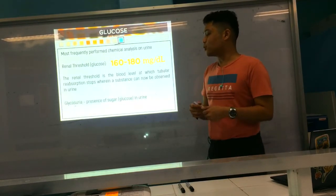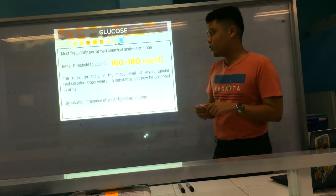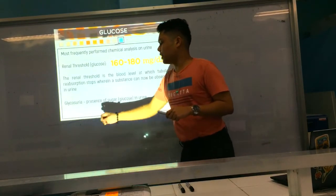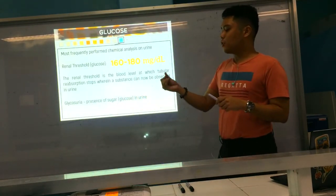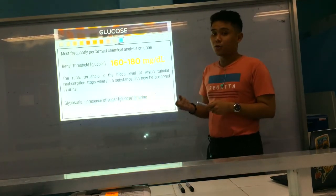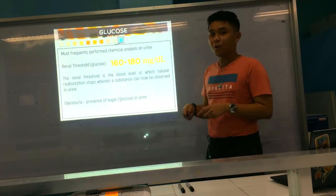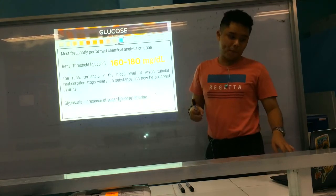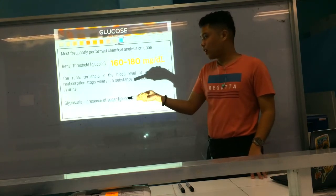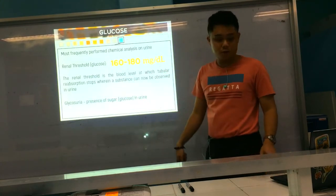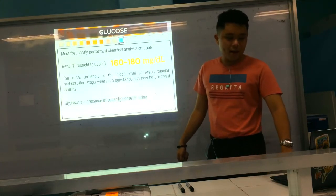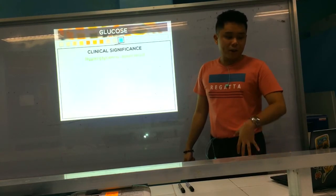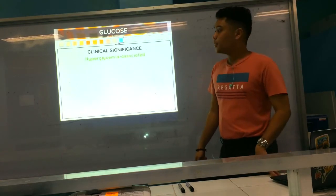When glucose or sugar is already found in the urine, we term that as glycosuria — or glucosuria. 'Glyco' means sugar, 'suria' means urine. Now for clinical significance: why do we test for glucose? We have two types.